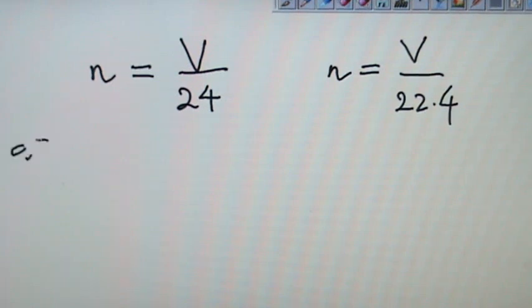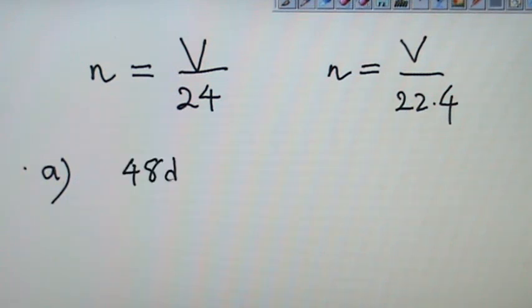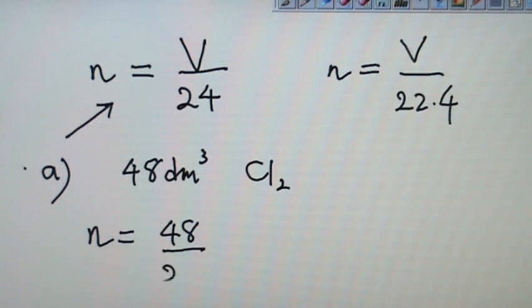So question A has something to do with room condition. At room condition. So they mentioned that there are 48 dm³ of chlorine gas, Cl₂. So what you do is, they mentioned that this has to be at room condition. So they want to find the number of moles. So we use this one. 48 over 24. So this one is 2 moles at RTP condition.